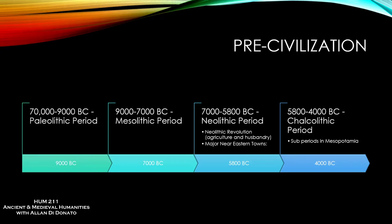Paleo means the old Stone Age. Mesolithic means the middle Stone Age. The Neolithic — neo means new — that was when we started agriculture and living in towns rather than tents and other temporary living arrangements. The Neolithic Revolution takes place roughly 7,000 to 5,800 BC, and that's exactly what happens: you have the advent of agriculture, which means settled habitation.